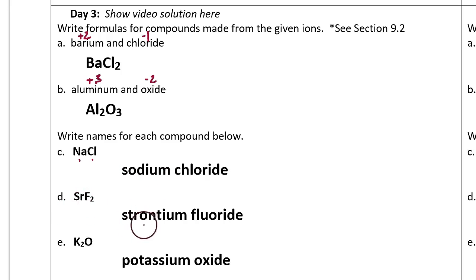Sr is the symbol for the word strontium. F is for fluorine, but in an ionic compound, the ending is changed to an 'ide' ending, so fluoride.